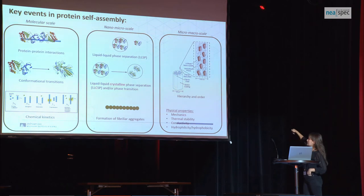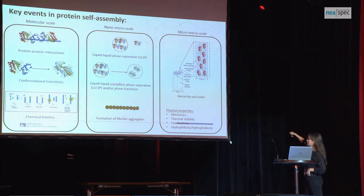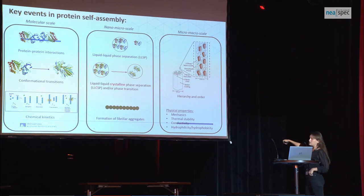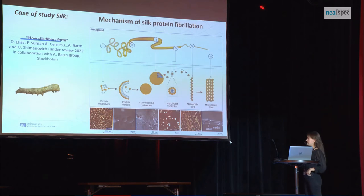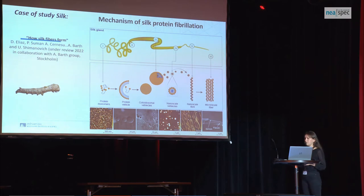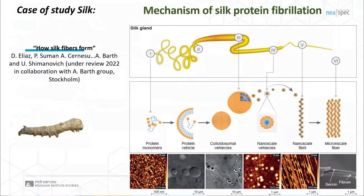This process occurs just prior to the formation of fibrillar aggregates. In materials science, these fibrillar aggregates — especially for silk — are aligned with the flow, and this alignment dictates the endpoint mechanics, thermal properties, conductivity, and hydrophobicity or hydrophilicity of the material. Today I will focus on one specific example: silkworm silk, in collaboration with Neospec, Adrian Czernesovic, and Andreas Barth's group.